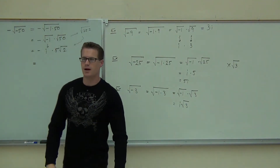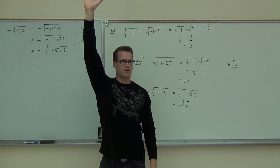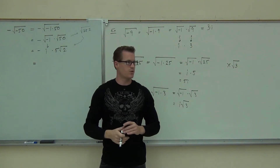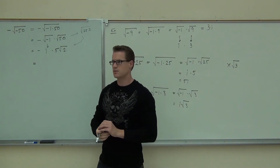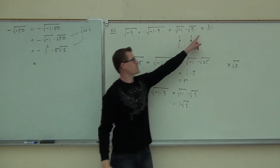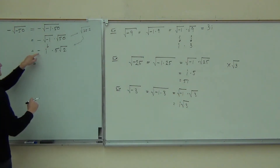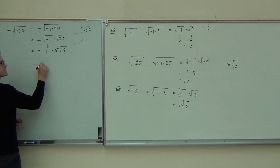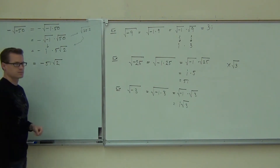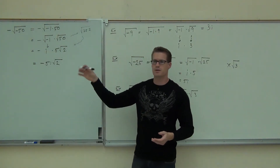We have negative i times 5 root 2. We're going to write this just a little bit better. Remember here how our whole numbers come first, our radicals come second. So what you can write this as is negative 5i root 2. Same principles: a whole number comes first, then an i, then a root.